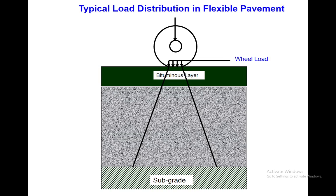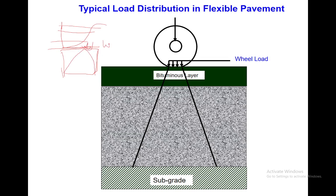Here we see a very clear explanation of typical load distribution in flexible pavement — how the load should be distributed and transmitted. As mentioned in earlier slides on pavement definition, the load needs to be transmitted and distributed over a large area so that the impact is spread. The load acting here is a dynamic, moving load, but its impact should be divided, transmitted, and distributed.